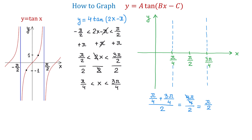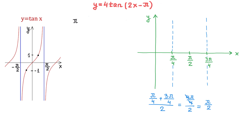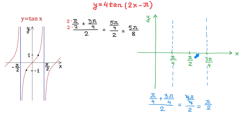To have a more accurate graph, let's find the x-coordinates of these points. The x-coordinate of the point right in between pi over 2 and 3 pi over 4 is found by adding pi over 2 and 3 pi over 4 and then dividing the result by 2. To add, we need the same denominator, so we multiply the numerator and denominator of the first fraction by 2. Then 2 pi over 4 plus 3 pi over 4 makes 5 pi over 4, and 5 pi over 4 divided by 2 makes 5 pi over 8. So this point has the coordinate 5 pi over 8.